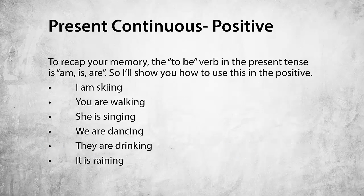To recap, the to-be verb in the present tense is am, is, are. And then on top of that, you just need a verb with an ING ending. Here are some examples of how it is used in the positive: I am skiing. You are walking. She is singing. We are dancing. They are drinking. It is raining.